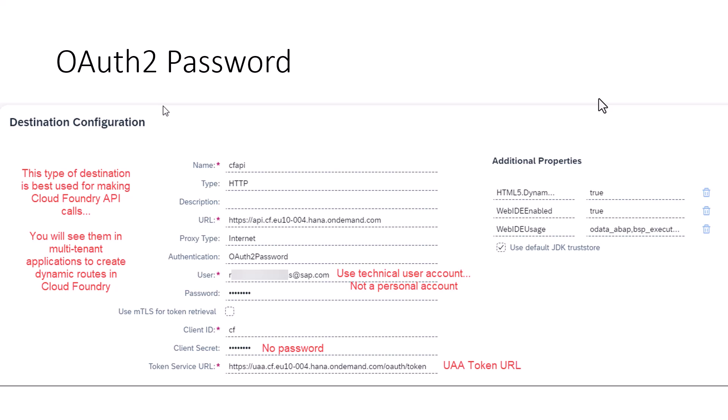Hello, everyone. In the previous video, we looked at the OAuth 2 password authentication mechanism. This is used for making calls to Cloud Foundry API calls, and you will see them quite often in multi-tenant applications to create dynamic routes.